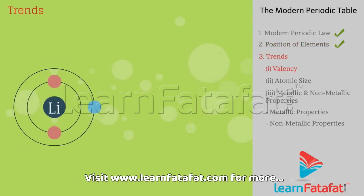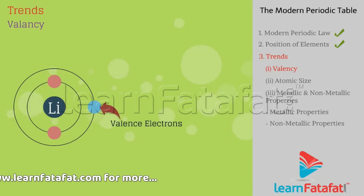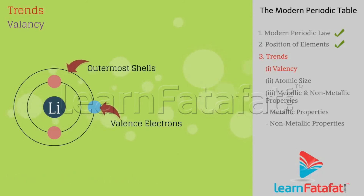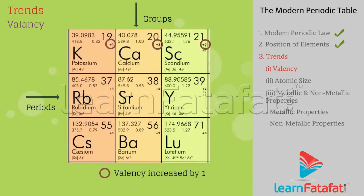Trends in the Modern Periodic Table — Valency: valency of the element is determined by the number of valence electrons present in the outermost shell of the atom. In a period, valency increases by one unit. In a group, valency remains the same.